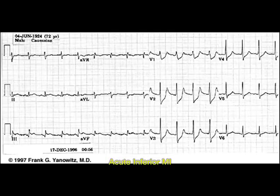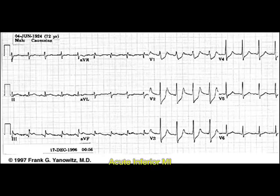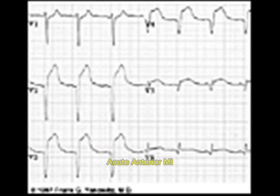Now you can see ST segment elevation in leads 2, 3, and aVF. This is characteristic of inferior myocardial infarction. Leads 2, 3, and aVF will have ST segment elevation, and there will be depression in V2, V3, V4 — those are reciprocal changes.